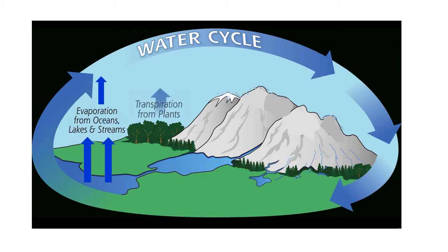As the water vapor rises, it cools down, eventually transforming into water droplets. This is called condensation. The water droplets coalesce, become heavier, and fall back to the earth as precipitation.